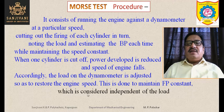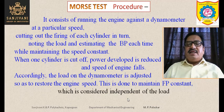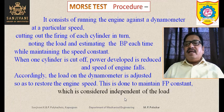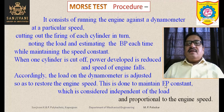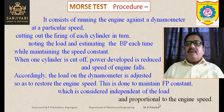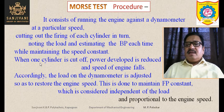Frictional power is assumed to be independent of load and proportional to engine speed. We vary the load but keep engine speed constant — this is an important assumption of the Morse test. Up to a considerable extent this assumption holds true, and we must make such assumptions to carry out the experiment.